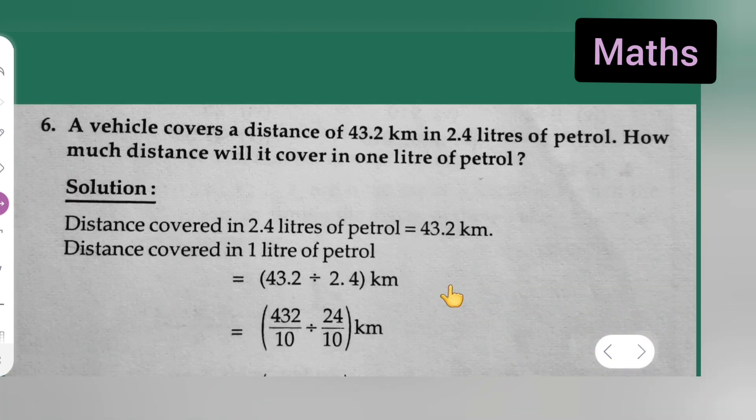So, let us see. First, take down the question. A vehicle covers a distance of 43.2 km in 2.4 litres of petrol. How much distance will it cover in 1 litre of petrol? Solution: